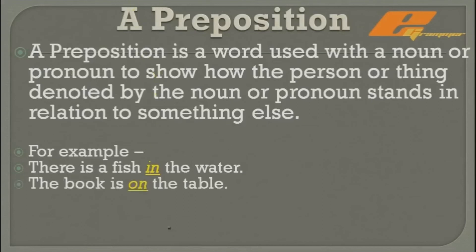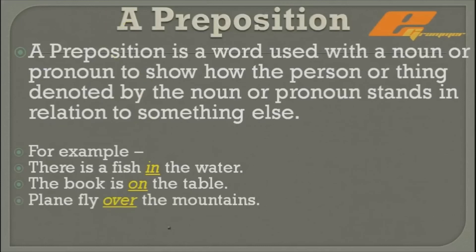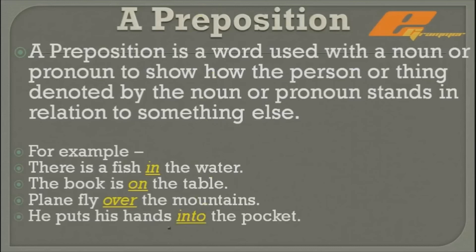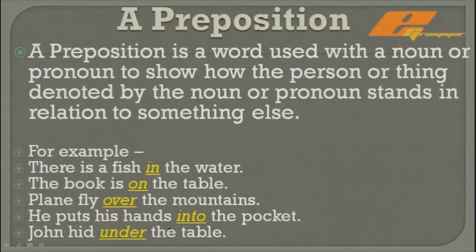Another example: 'The book is on the table' — 'book' is a noun and 'on' shows its position, so 'on' is a preposition. More examples: 'Planes fly over the mountains,' 'He puts his hands into the pocket,' 'John hides under the table.' The key thing to remember is that a preposition shows the position of a noun.